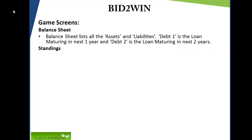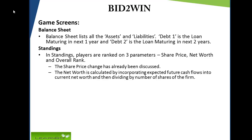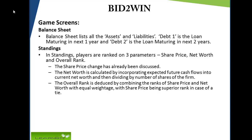Balance sheet lists all assets and liabilities. Debt 1 is the loan maturing in the next 1 year and Debt 2 is the loan maturing in the next 2 years. In standings, players are ranked on three parameters: share price, net worth, and overall rank. The net worth is calculated by incorporating expected future cash flows into current net worth and then dividing by the number of shares of the firm, which helps normalize net worth across small, medium, and large firms. The overall rank is deduced by combining the ranks of share price and net worth with equal weightage, with share price being the superior rank in case of a tie.